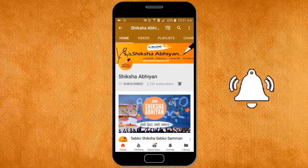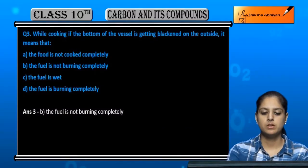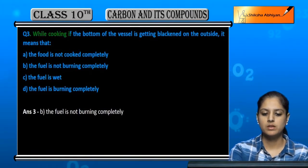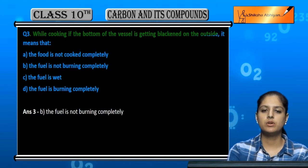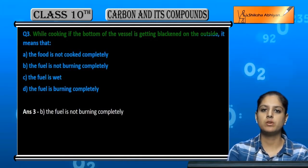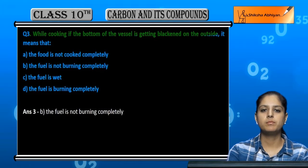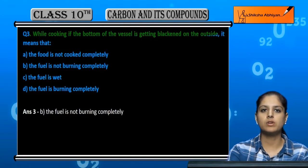Question number three: while cooking, if the bottom of the vessel is getting blackened on the outside. The vessel is cooking, if the outer surface, the bottom, is getting black from outside, what does it mean?